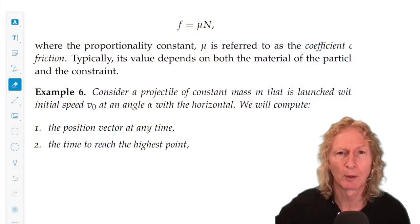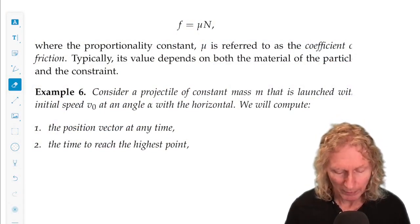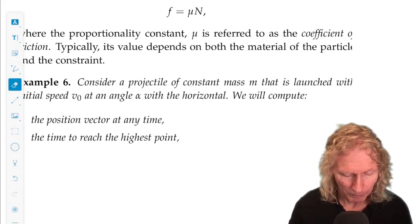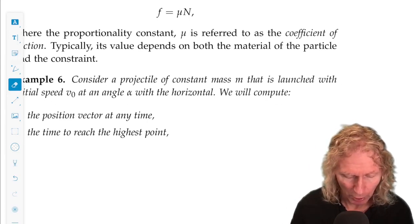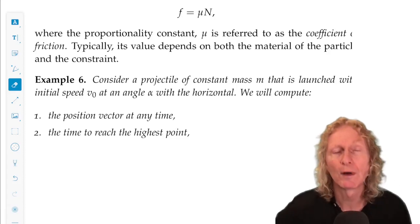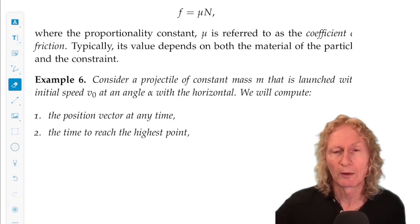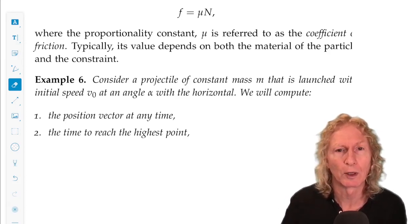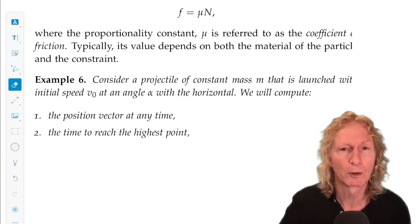Example 6 is a projectile problem. So we have a particle of mass m that's launched with an initial speed v-naught at an angle alpha with respect to the horizontal. So our coordinates will be the usual x, y, z coordinates. Horizontal will be x and y, vertical distance z.